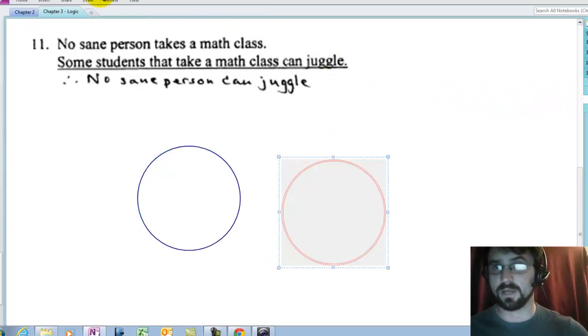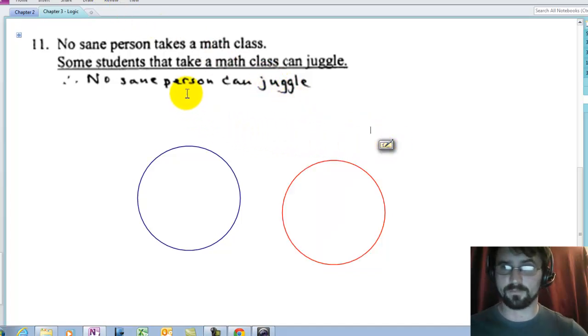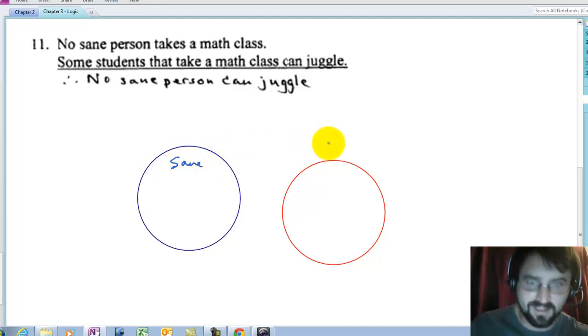Okay. Here's my next one. It says, no sane person takes a math class. So let me put sane people over here. I needed to put sane. So these are the sane people. And everybody outside of sane would be insane, but that's all right. And then these are people who take math classes. So over here I'll put math takers. And they're saying pretty much that math takers are insane.